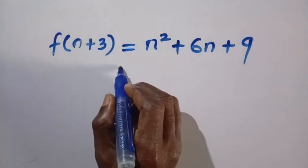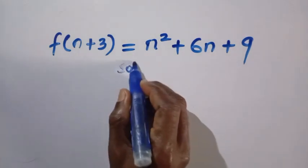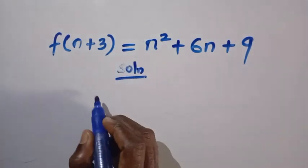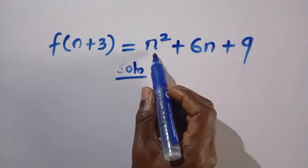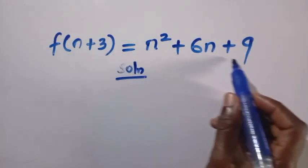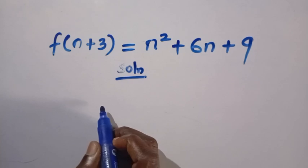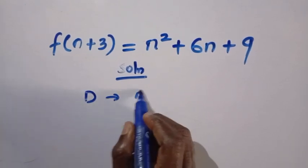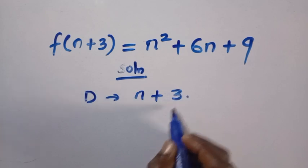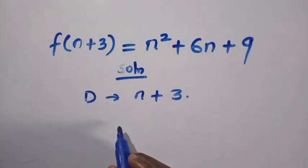So let's start with the solution first. We want to find f(n) if we have f(n+3) = n² + 6n + 9. The domain of these functions is given as n+3. I want to reduce it to only n.